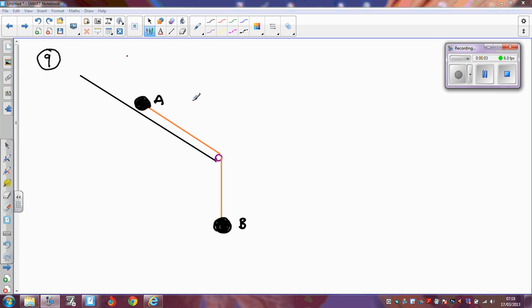OK, here's the situation for question 9. Let's just put in some forces. A is resting on a smooth slope, so there's no friction, but we do know that the weight of A is 0.2kg.